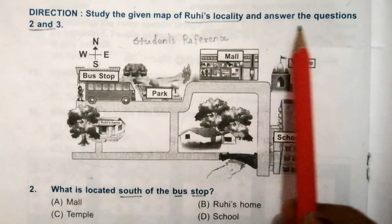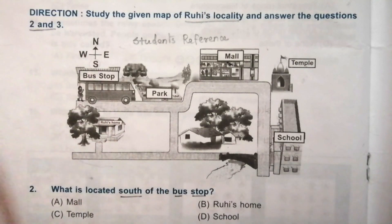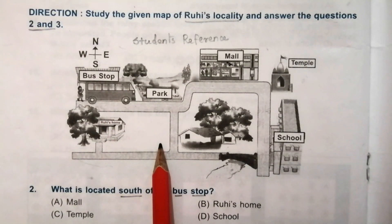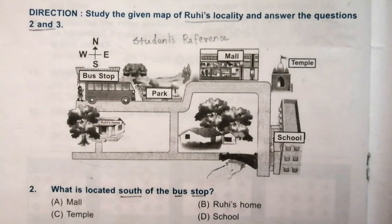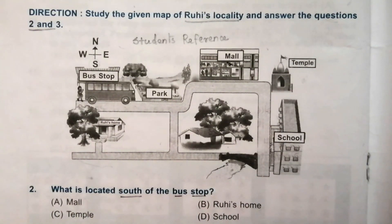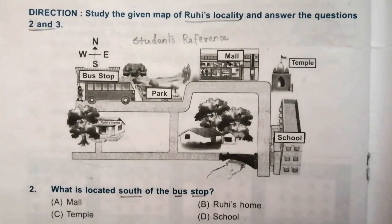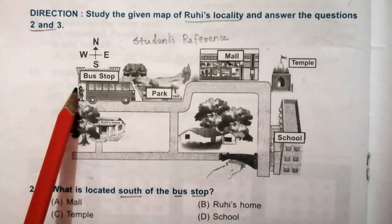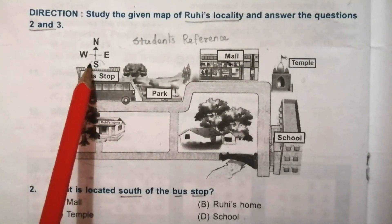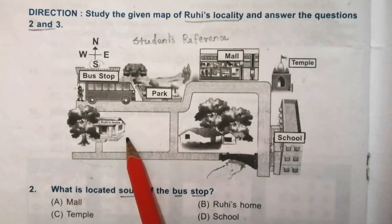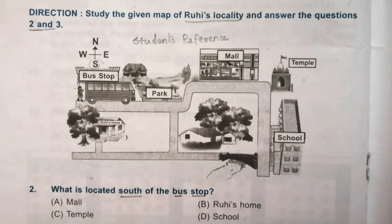Direction study: study the given map of Rookie's locality and answer questions 2 and 3. Look at the given picture carefully. Question 2: what is located south of the bus stop? Options are: mall, Rookie's home, temple, school. South of the bus stop means the downward direction. Rookie's home is in the downward direction of the bus stop, so the answer is Rookie's home.